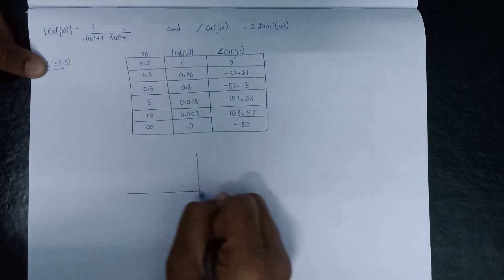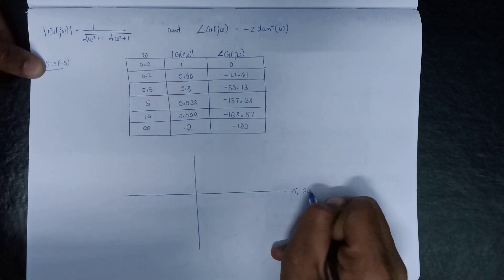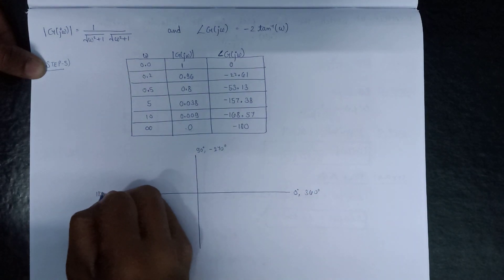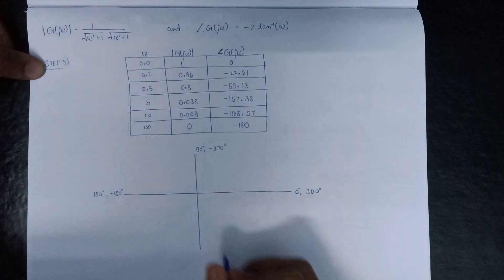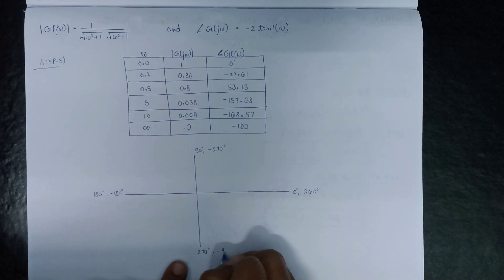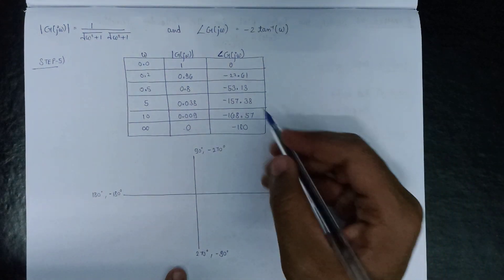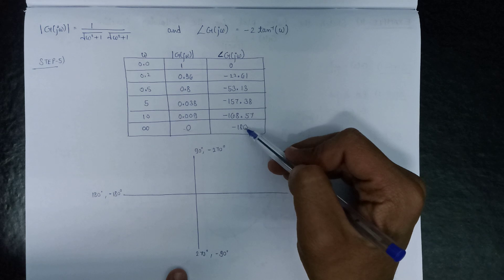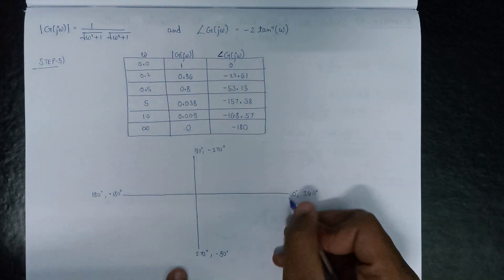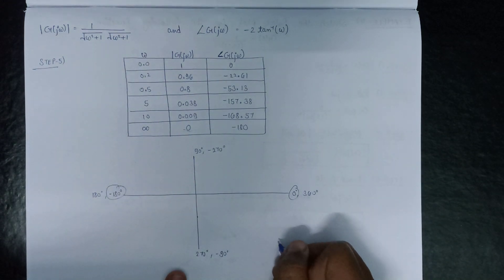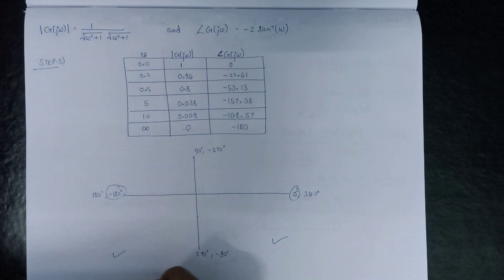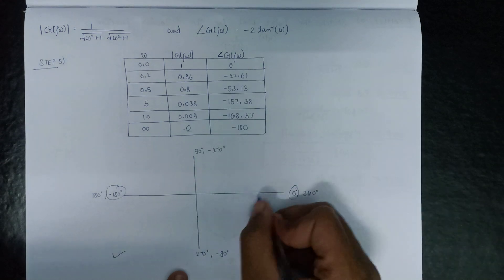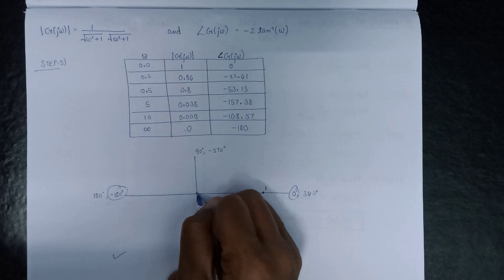Now we plot the polar plot. The axes are: 0°/360° on the right, +90° or −270° at the top, 180°/−180° on the left, and 270°/−90° at the bottom. Based on the phase angles, which are all negative (from 0 to −180°), the polar plot will lie in the fourth and third quadrants. The magnitude starts at 1 and ends at 0 (the origin).